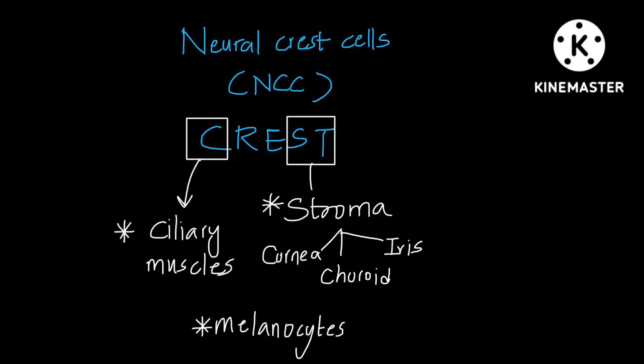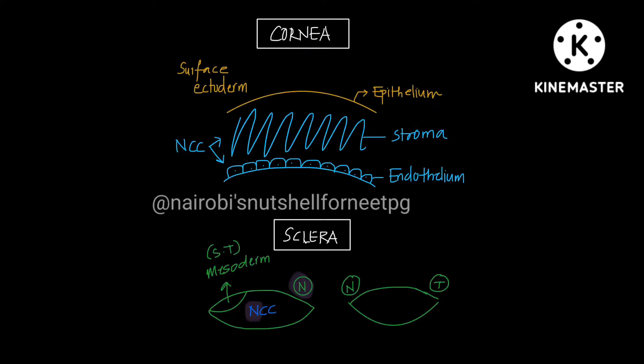Moving on to the neural crest cell part. The spelling has C-R-E-S-T. C is for ciliary muscles, and the last ST is for stroma — stroma of all the different parts, that is cornea, choroid, and iris. Lastly, melanocytes are also from the neural crest cells.